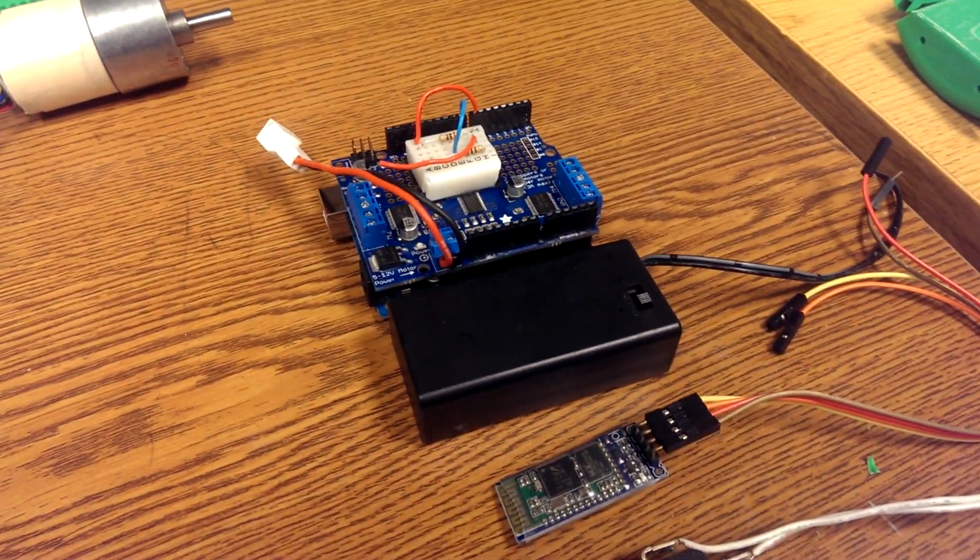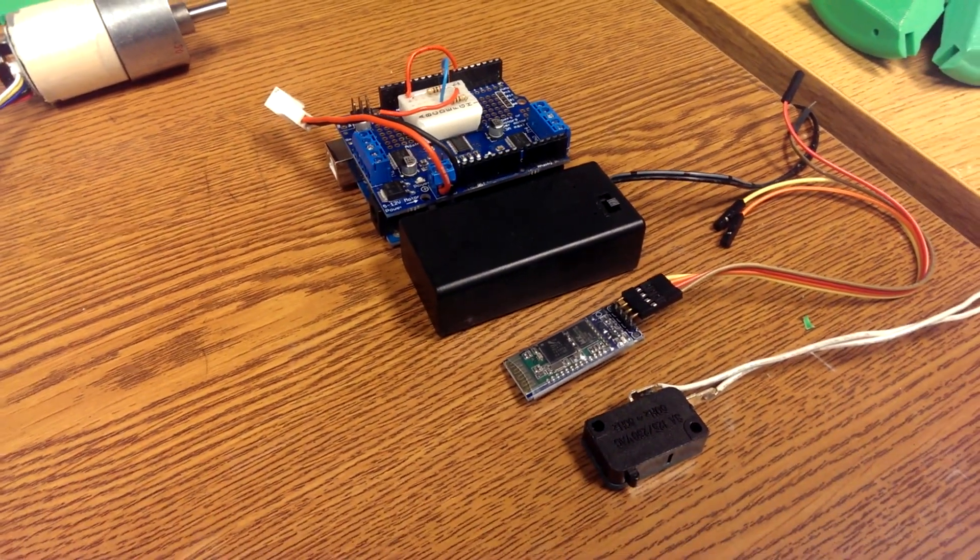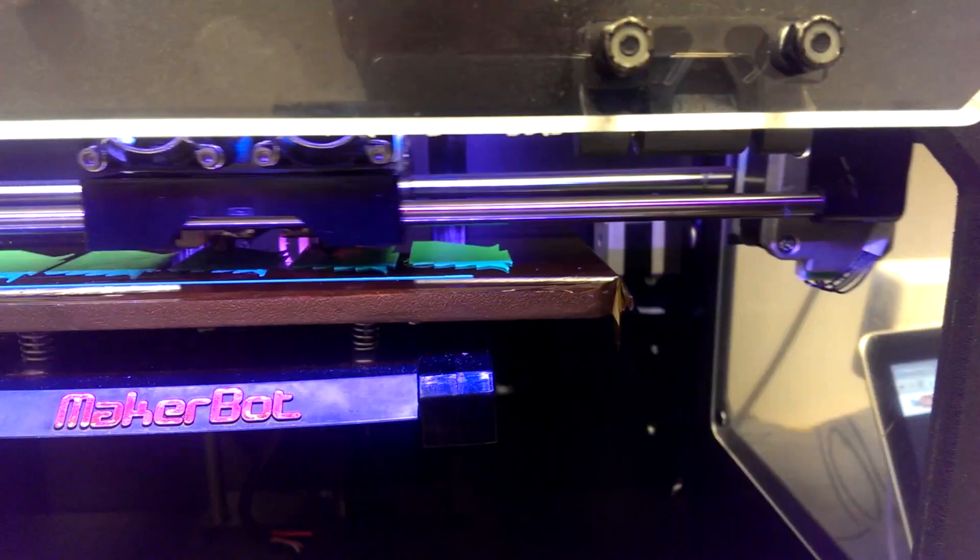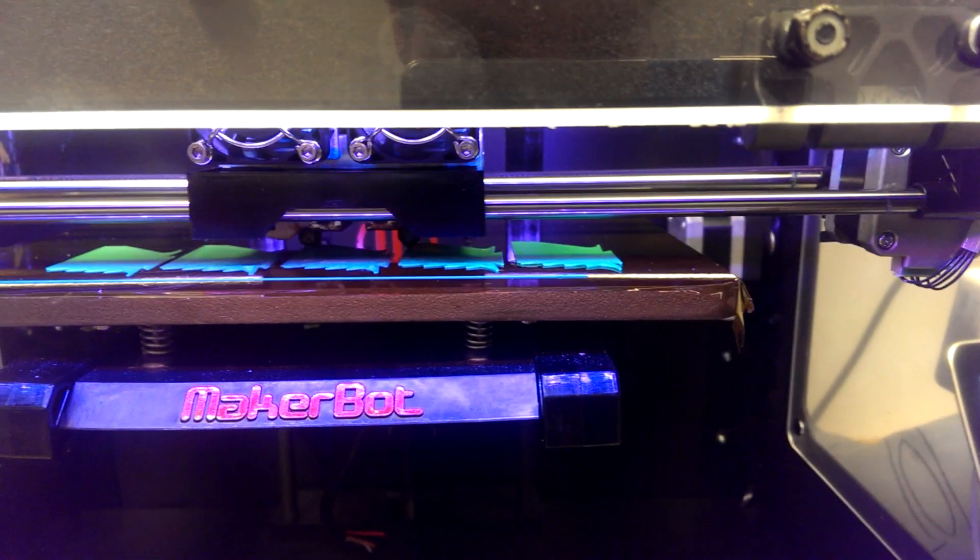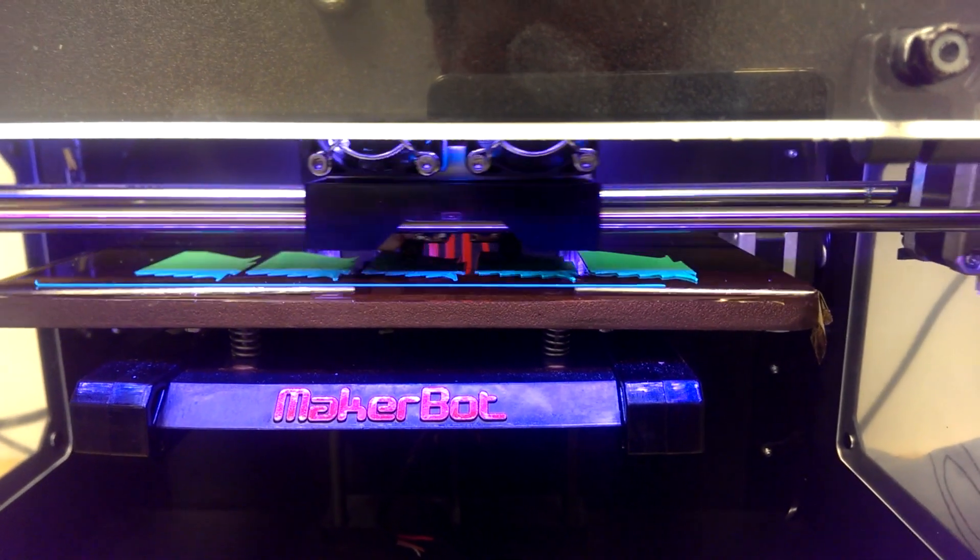And then finally I'm using an Arduino Uno with a motor shield and some Bluetooth to control all of this. Each wheel will also need five off-road grips which I didn't show because I'm currently 3D printing them.